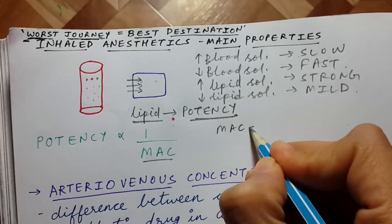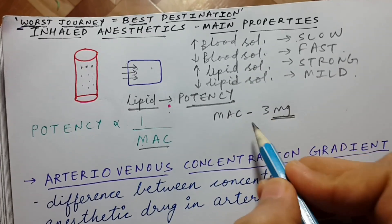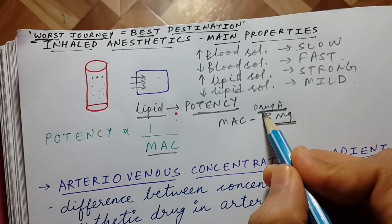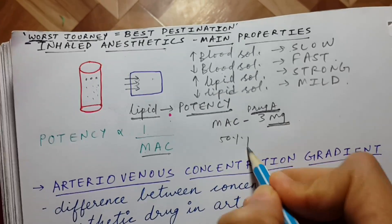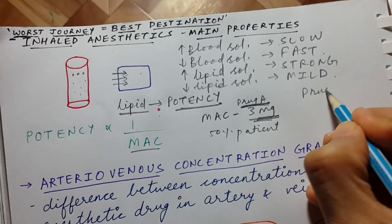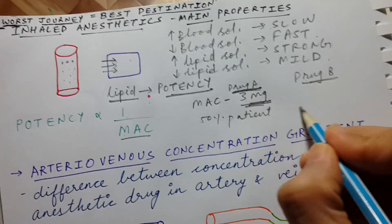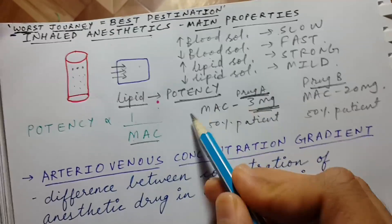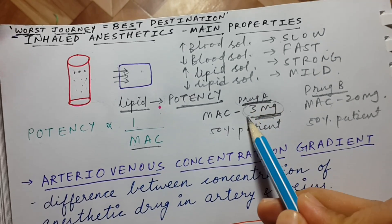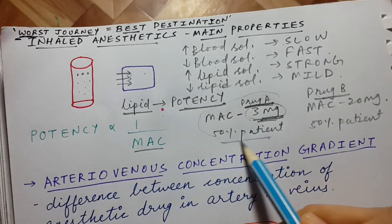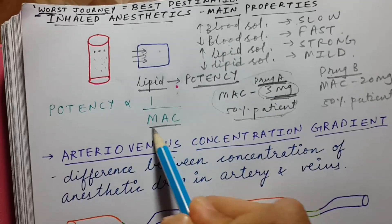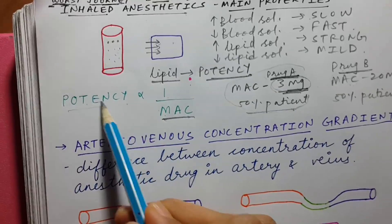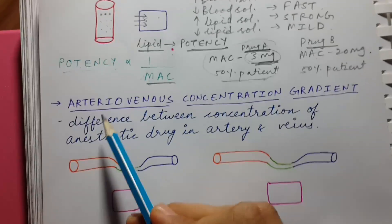For example, if drug A produces its effect in 50% of patients at a concentration of 3 mg, and drug B requires 20 mg to produce the same effect in 50% of patients, then drug A is more potent because it produces the same effect at a much lower concentration. So if a drug has a low MAC, its potency is high, and if it has a high MAC, its potency is low — they are inversely proportional.